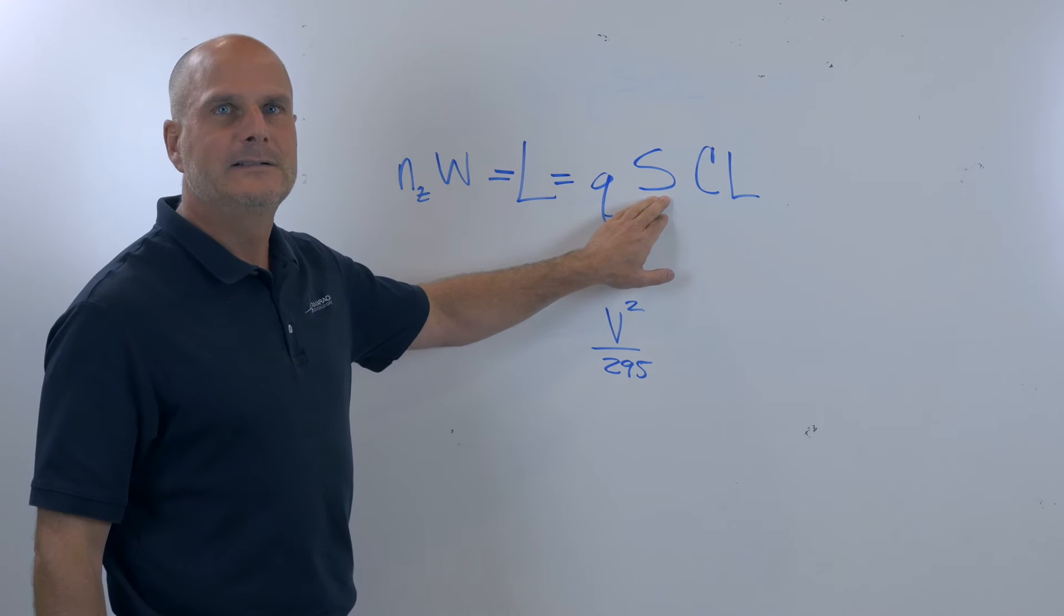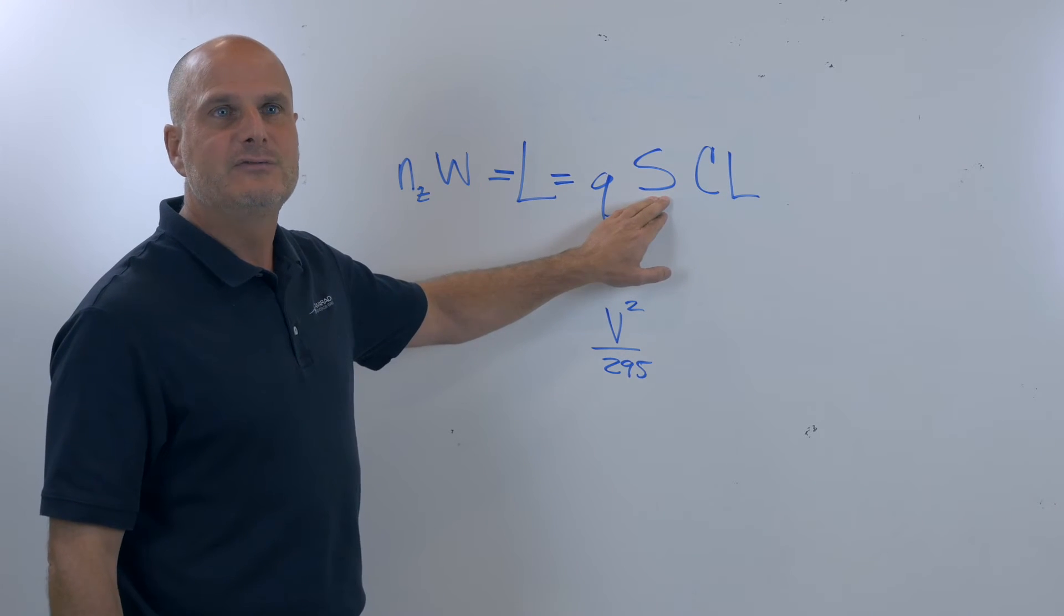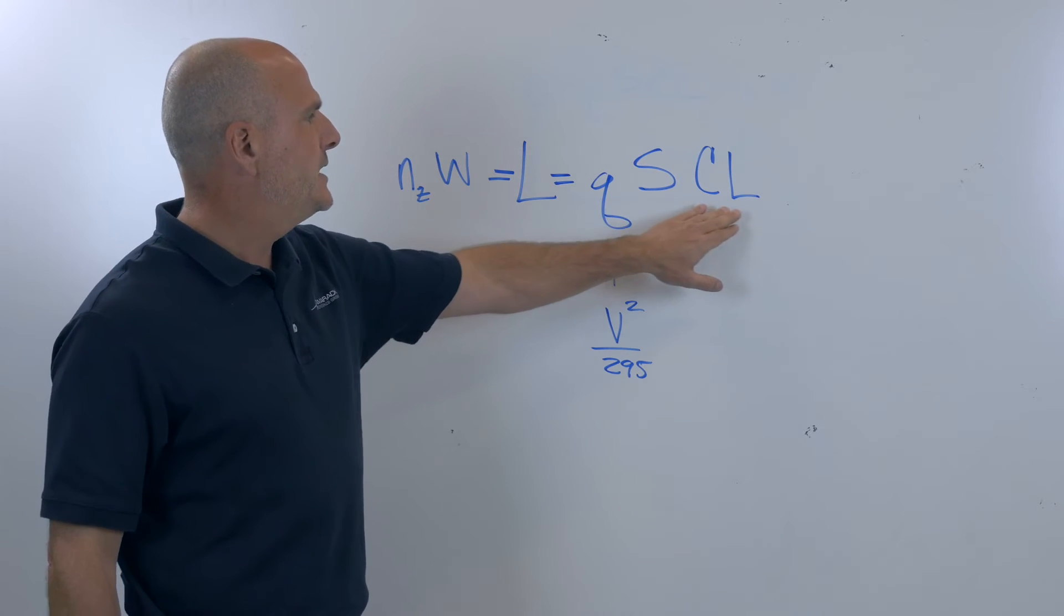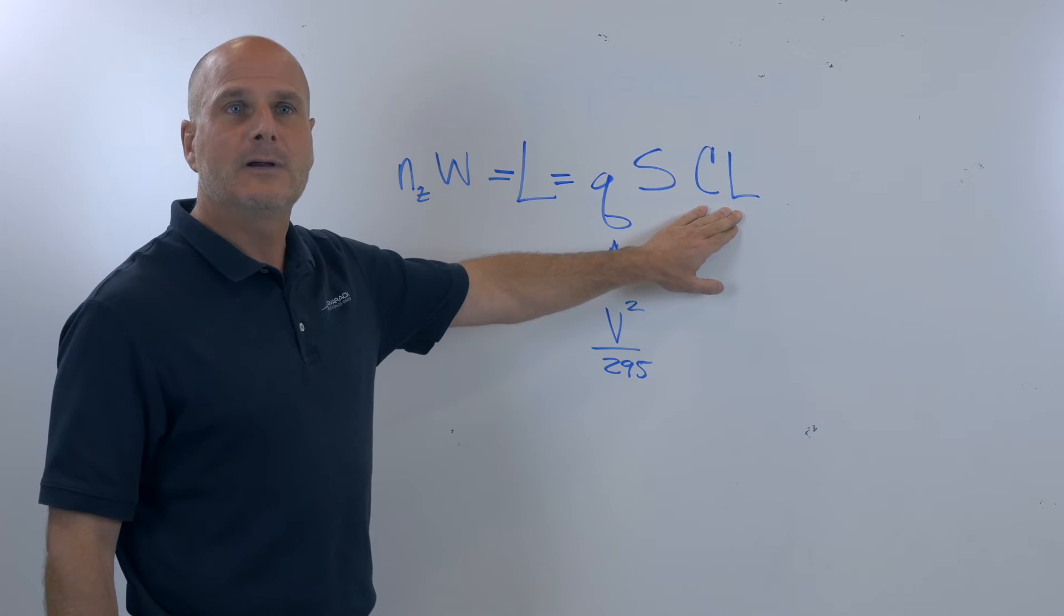This would be your wing reference area. Like on a Citation jet, it's about 240. And CL is whatever lift you're generating at that time.